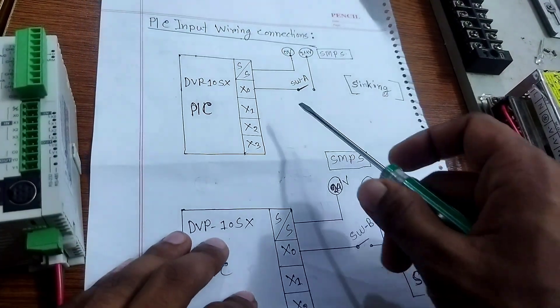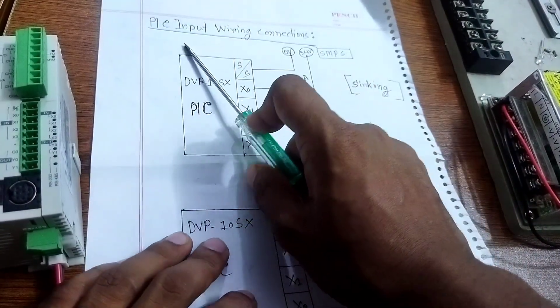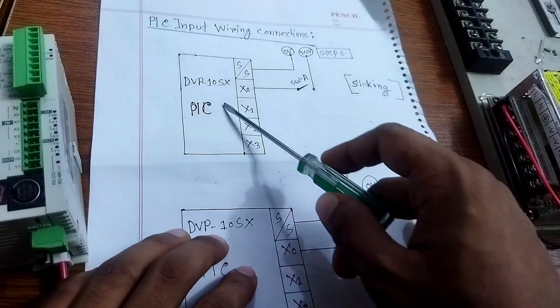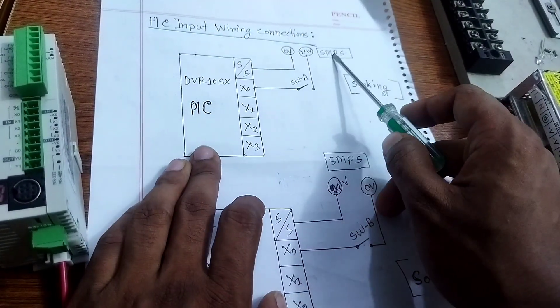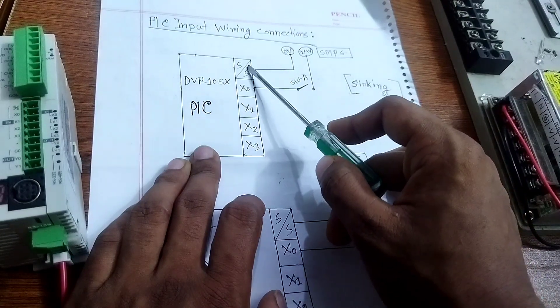Now this diagram here shows PLC input ordering connections. In this diagram, SMPS zero volt connects to the SS port terminal, and X0 connects to switch A. The 24 volt from SMPS - this ordering is sinking ordering.